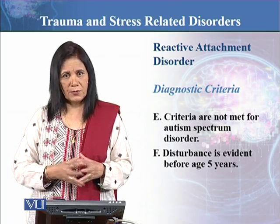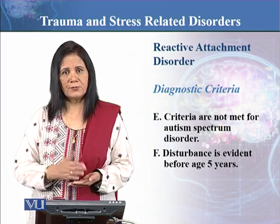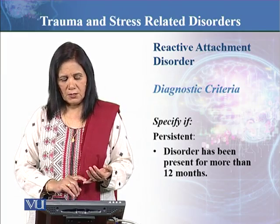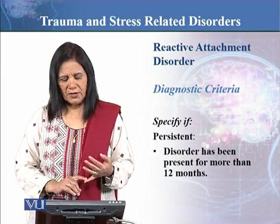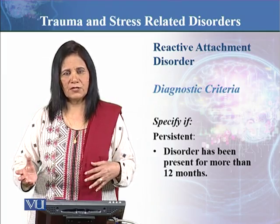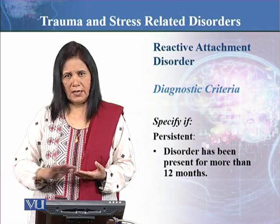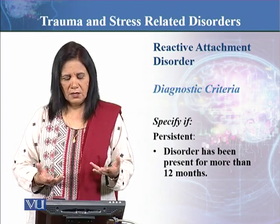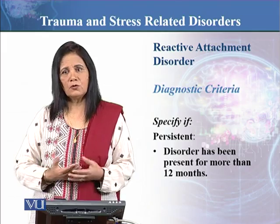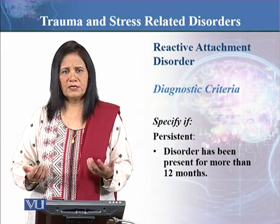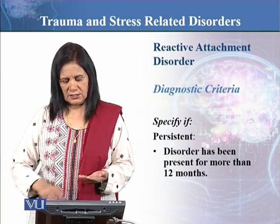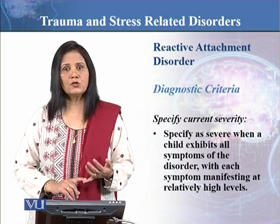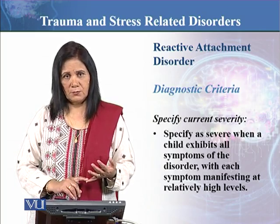If the disturbance is observed before age five, you will diagnose Reactive Attachment Disorder. You then need to specify whether it is persistent — meaning the disorder has been present for more than 12 months. It could be present for 2, 3, or 4 months, but if it persists for one year or beyond, this must be specified as a persistent specifier.